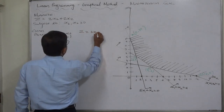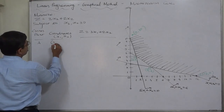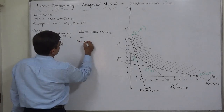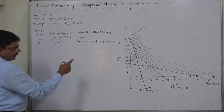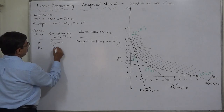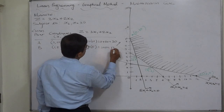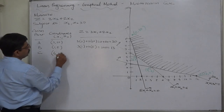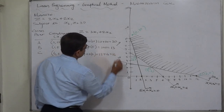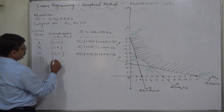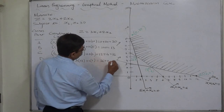Evaluating Z equals 3x1 plus 2x2 at each corner point: At A (0, 10): 3×0 plus 2×10 equals 0 plus 20 equals 20. At B (1, 5): 3×1 plus 2×5 equals 3 plus 10 equals 13. At C (4, 2): 3×4 plus 2×2 equals 12 plus 4 equals 16. At D (12, 0): 3×12 plus 2×0 equals 36 plus 0 equals 36.